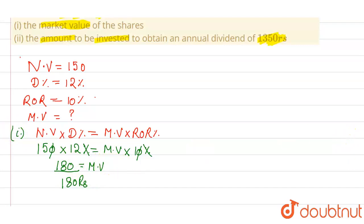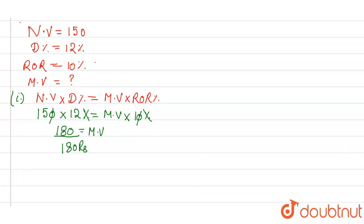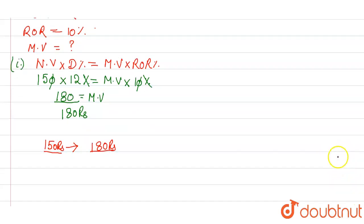Now the second part asks for the amount to be invested to obtain an annual dividend of 1350 rupees. So when a person invests in a 150 rupees share, he has to invest 180 rupees. If a man buys a 150 rupees share for 180, the person has to invest 180.